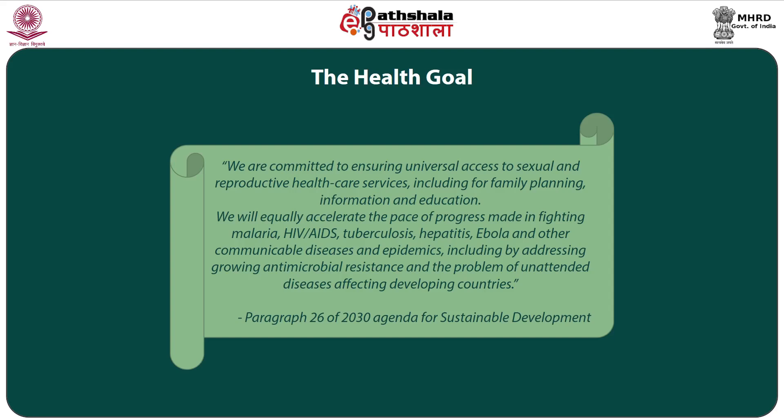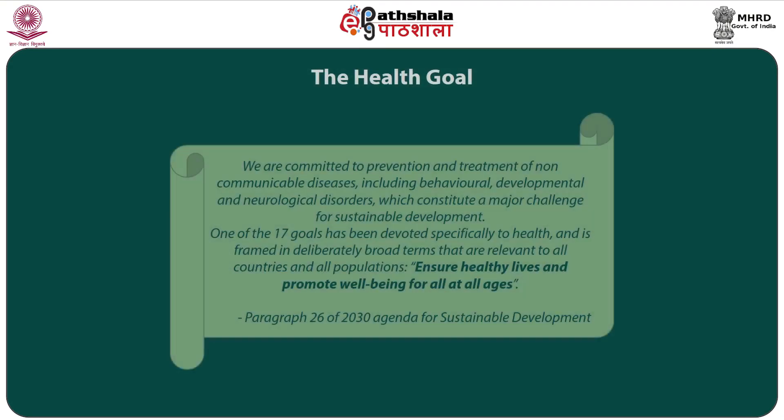One of the 17 goals has been devoted specifically to health and it is framed in a deliberately broad manner covering all relevant aspects pertaining to different countries and all sections of the population. It says: ensure healthy lives and promote well-being for all at all ages. The health goal is associated with 13 targets including 4 means of implementation targets labeled 3A to 3D. Though the 2030 Agenda refers to human rights, rights to development, self-determination, adequate standard of living, food, water, sanitation, good governance and rule of law, it does not specifically mention that health is a human right.